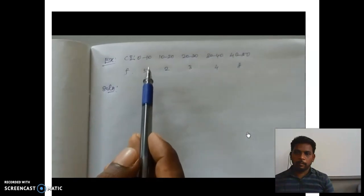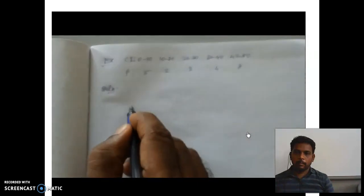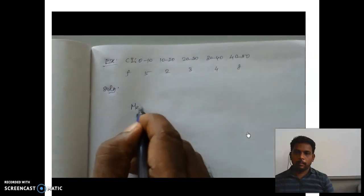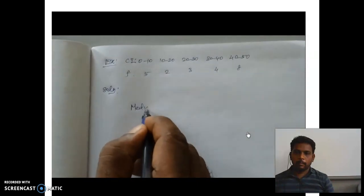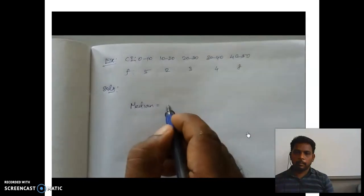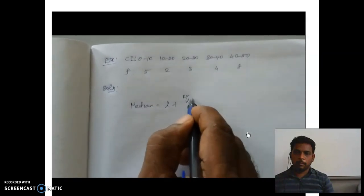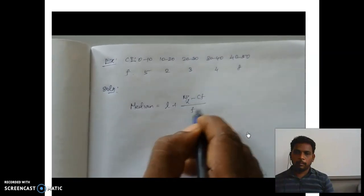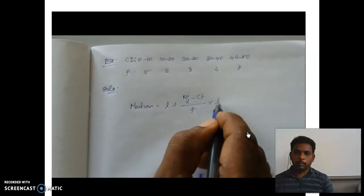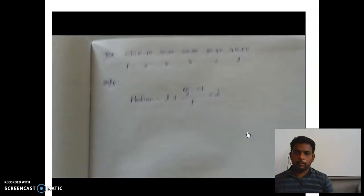The formula for median in the case of continuous data is: L plus (n by 2 minus cf) divided by f, into h. That is the formula.